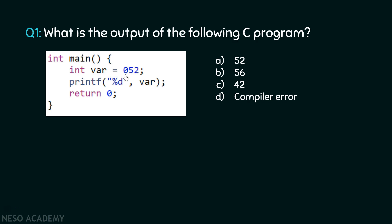When we place a zero in front of any value, then that value is treated as an octal value and not a decimal value. Please note down this thing — this is very important. When we place zero in front of any value, then that is treated as an octal value and not a decimal value.